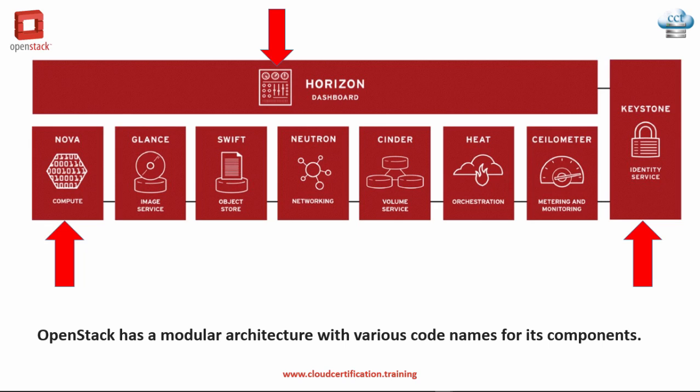The next thing to take note of is OpenStack Compute, which is called Nova. It's a cloud computing fabric controller, which is the main part of an IaaS — Infrastructure as a Service — system. It's designed to manage and automate pools of computer resources and can work with widely available virtualization technologies as well as bare metal and high-performance computing configurations. KVM, VMware, and Xen are available choices for the hypervisor technology, together with Hyper-V and Linux container technologies such as LXC.